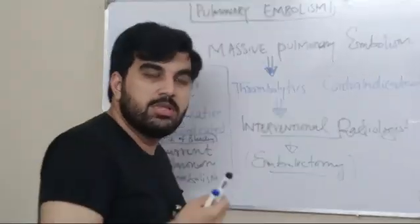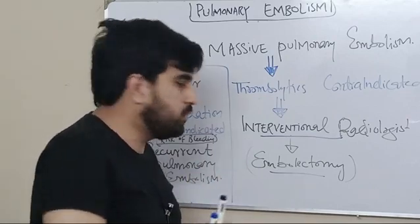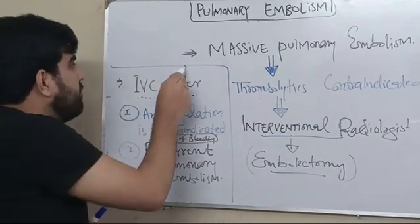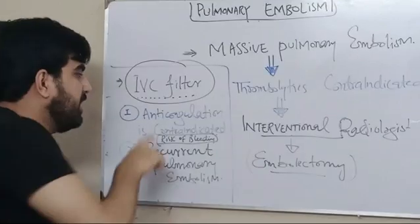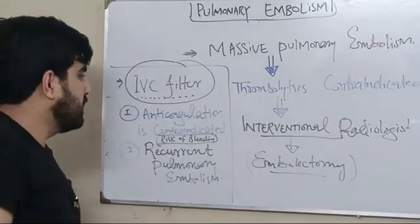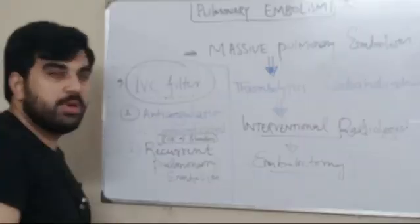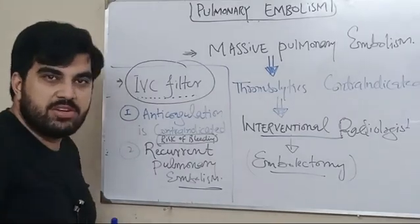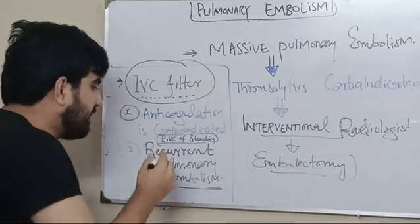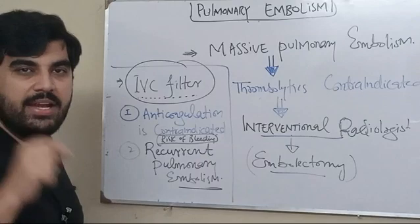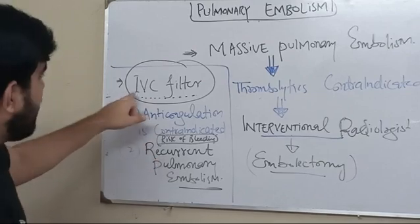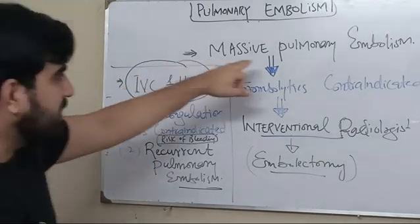When do you place an inferior vena cava (IVC) filter? If anticoagulation is contraindicated because of the risk of bleeding, or if there is recurrent pulmonary embolism in spite of anticoagulation therapy — which is called anticoagulation failure — in these two conditions the answer is an IVC filter. In the case of massive PE with contraindicated thrombolytics, the answer is embolectomy.